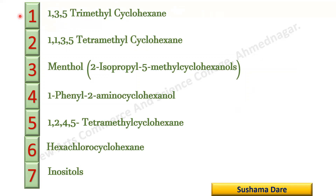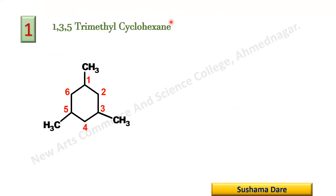In this video, I am going to share with you only the first compound: 1,3,5-trimethylcyclohexane. Whenever a compound is given, you first draw the planar ring — write down the six-membered ring in a planar conformation — and then number it 1, 2, 3, 4, 5, 6. After giving the numbers, you identify the substituents and their positions.